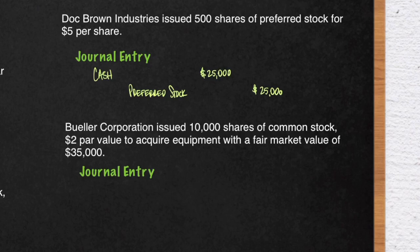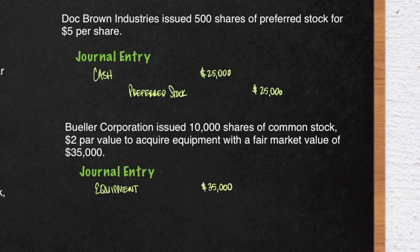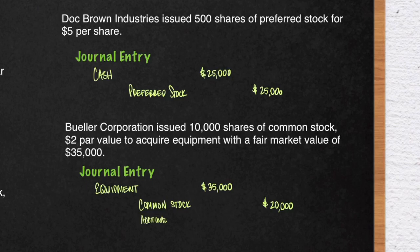In the next example, we have Buehler Corporation who issued 10,000 shares of common stock with a $2 par value to acquire equipment — not cash — but equipment which had a fair market value of $35,000. So instead of debiting cash, here we're going to debit what the company attained, which is equipment for $35,000. You're going to credit common stock for $20,000 — that's the $2 par times 10,000 shares. The difference will be $15,000, a credit to additional paid-in capital in excess of par value common stock.